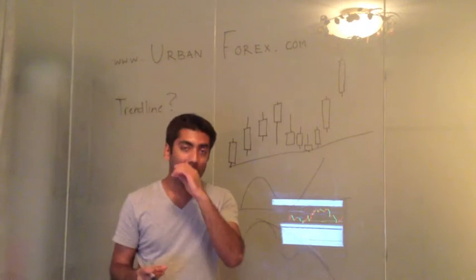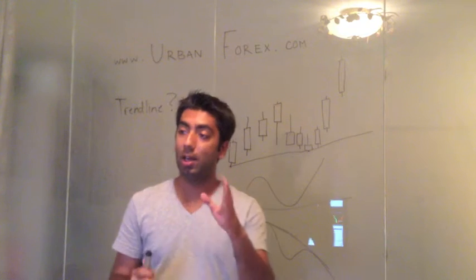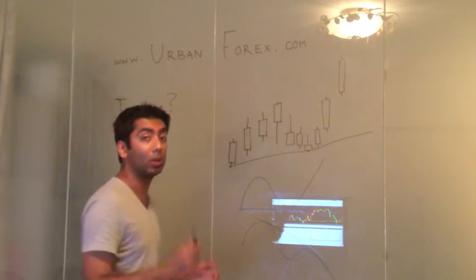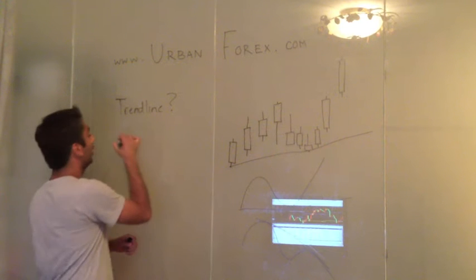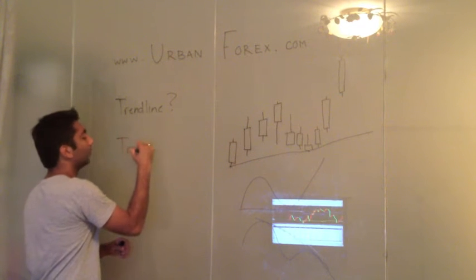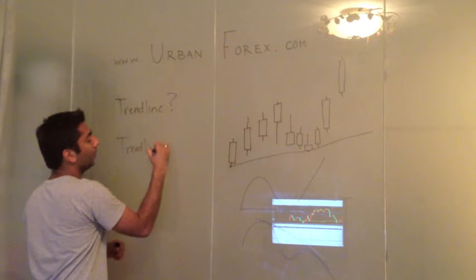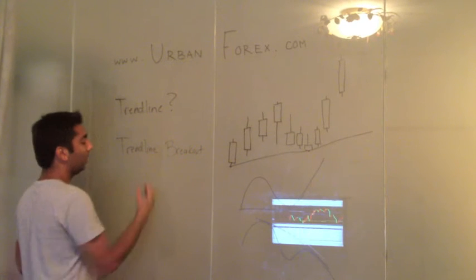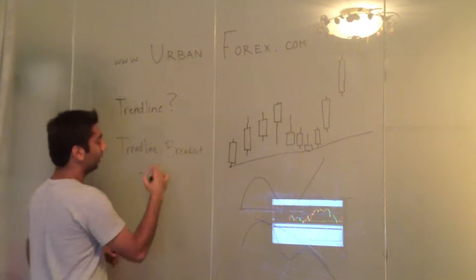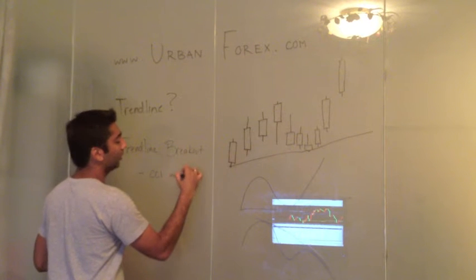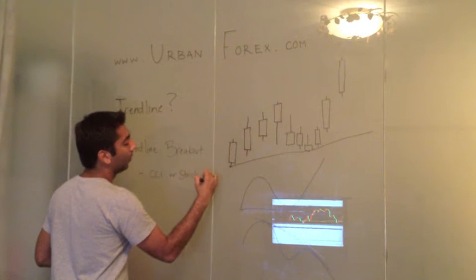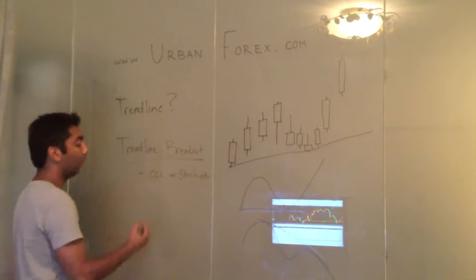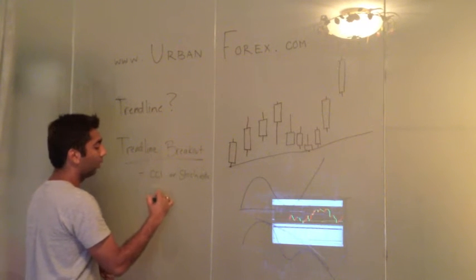There are various techniques and strategies you can do with trend lines, and below the video in the information we'll give you some strategies. A very famous one is a trend line breakout strategy. If you combine this with one or two indicators such as CCI or Stochastics, you can use a nice trend line breakout strategy on the one hour timeframe.